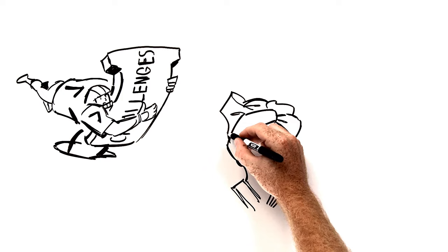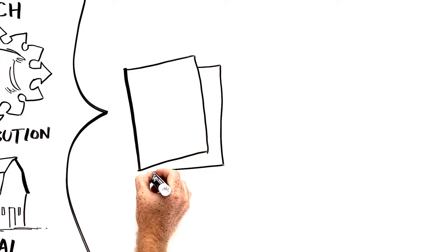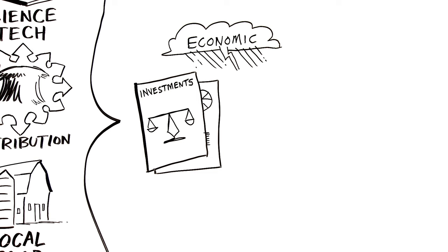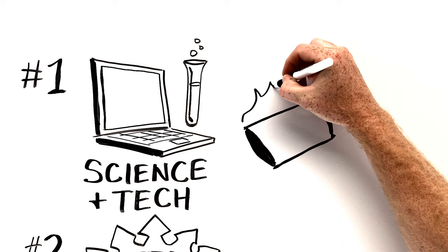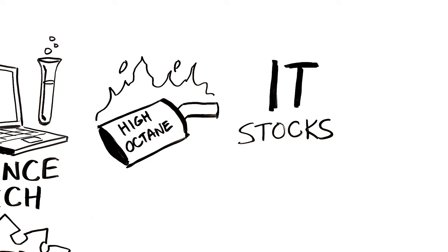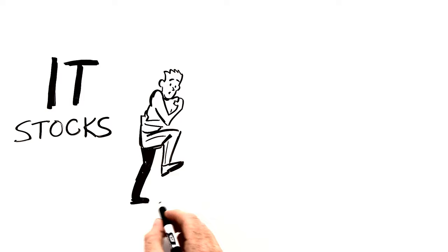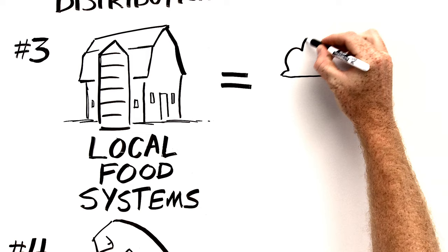To effectively tackle the challenges of feeding the future, the most sensible approach is to imagine these four types of solutions as components of a well-balanced investment portfolio. One that's resilient enough to weather economic storms is still able to provide strong year-over-year returns and is secure against fraud and theft. Think of new agricultural technologies as similar to high-octane IT stocks. They're an important part of a profitable investment strategy. But an over-reliance on them could cost you your shirt if the market turns against you.